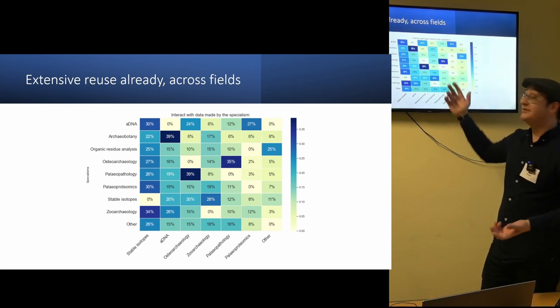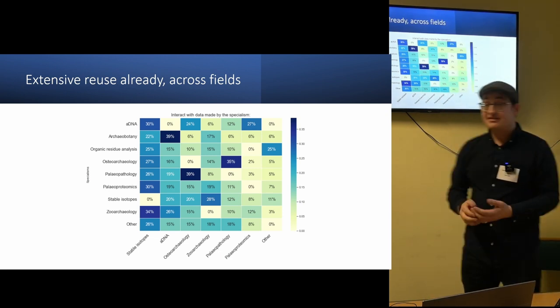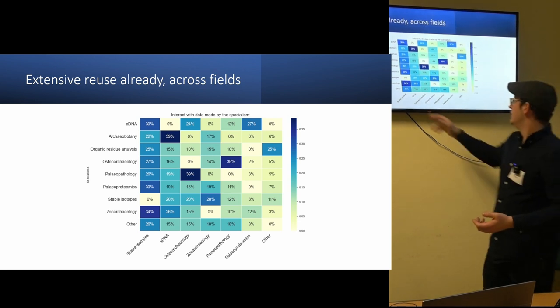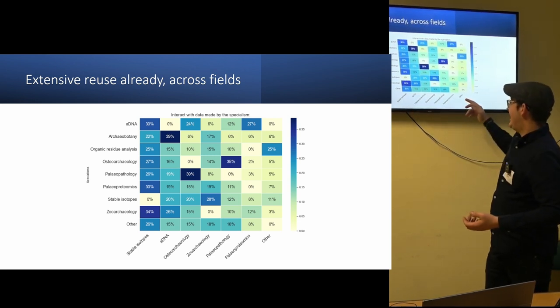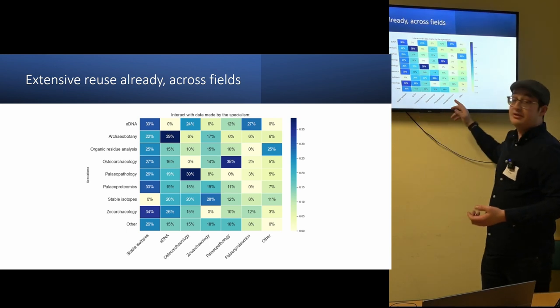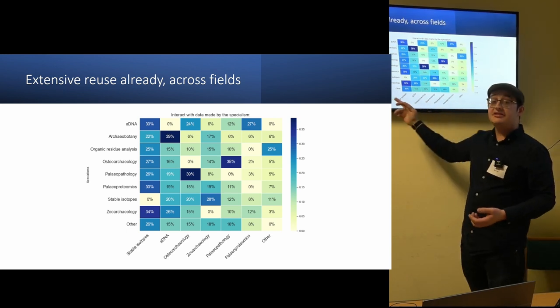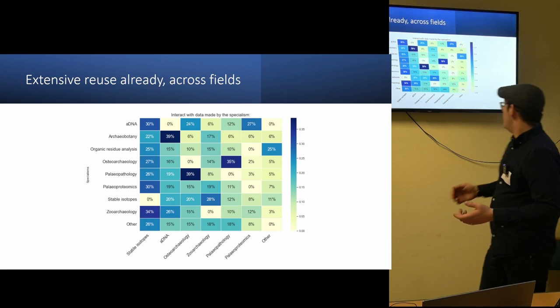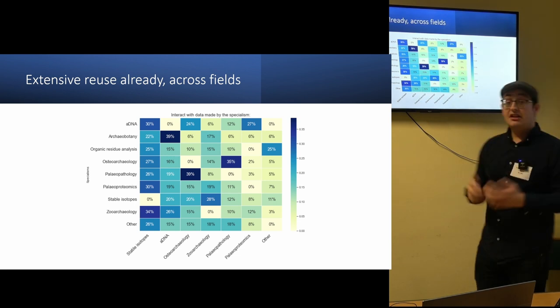But importantly, there's a lot of reuse already happening, and this is across many different fields. And so the bottom x-axis here is in decreasing amount of interaction, so stable isotopes are the most interacted with, whilst other and paleoproteomics are less interacted with.